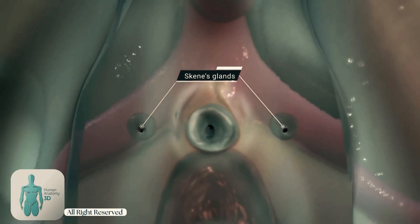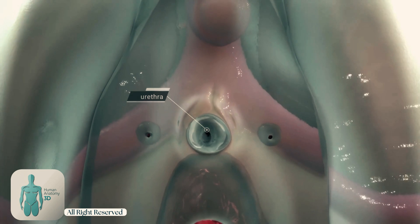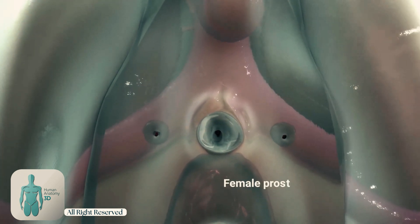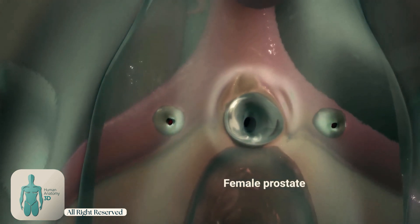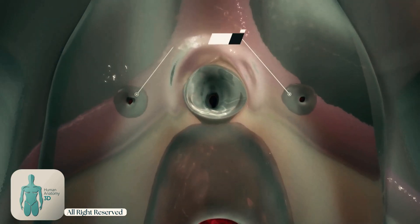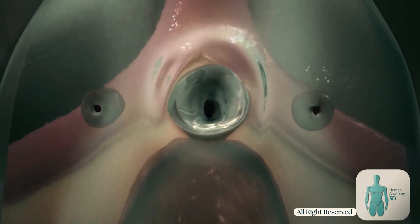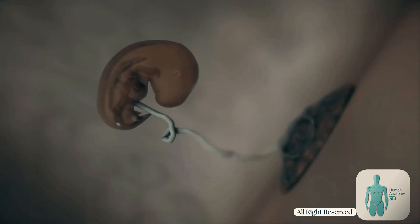Skene's glands are located around the urethra in women and are often referred to as the female prostate. The prostate in males and the Skene glands in females both have a common origin in the undifferentiated tissues of the genital system in the early stages of embryonic development.